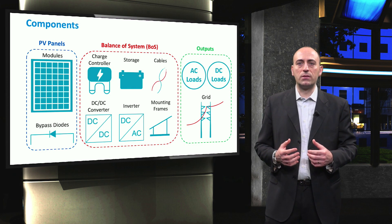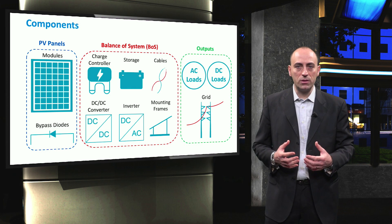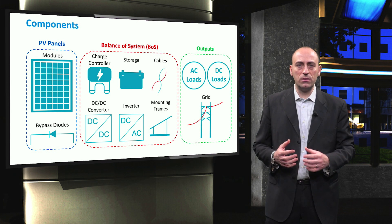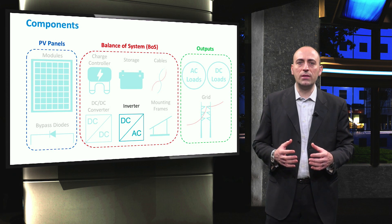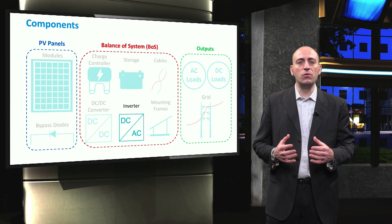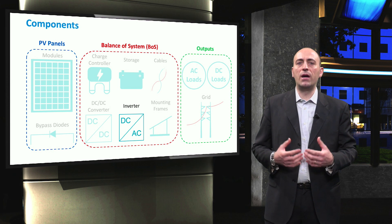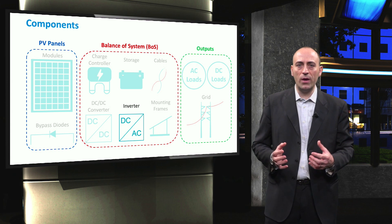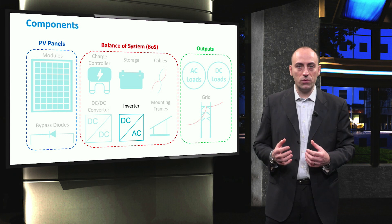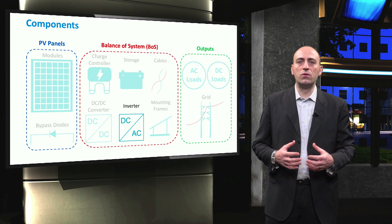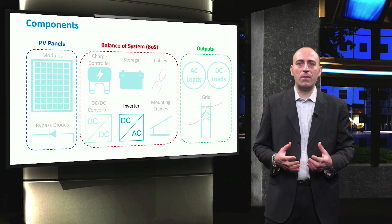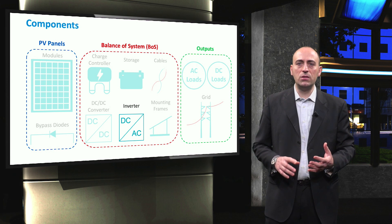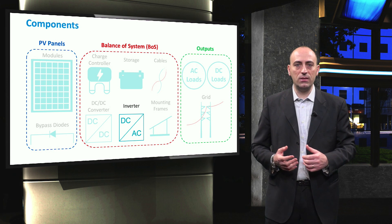Coming back to this slide that summarizes the most important components forming a PV system, we can find the inverter again in the balance of system block. It is very important to note that the term inverter can have two different meanings. First, it is used for the actual inverter, which is the electronic device that performs the DC to AC conversion. Secondly, the term inverter is also used for the total unit produced by manufacturers and thus, depending on the application, it may contain an MPP tracker, a DC-DC converter and a DC-AC inverter.